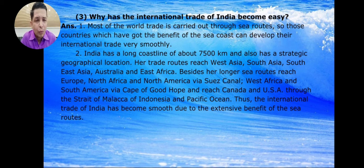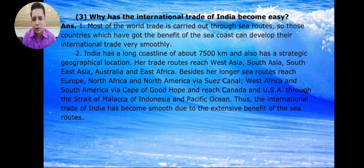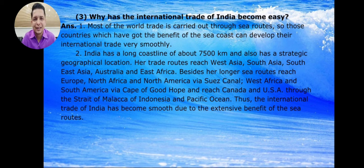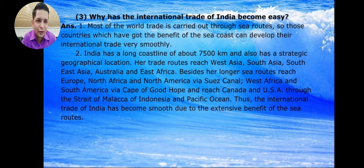Benefit number 1: Most of the world trade is carried out through sea routes, and countries which have the benefit of a sea coast can develop their international trade very smoothly. The world trade is usually by sea and India has a good coastline. India has a coastline of about 7500 km and also a strategic geographical location.